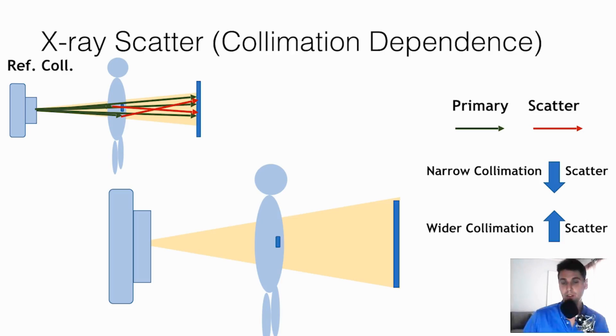One of the physical effects that will change the amount of x-ray scatter in the image is the collimation or the field which is being irradiated. So if you think about our reference case where we have this amount of x-rays coming in, here's the collimation shown here in yellow.